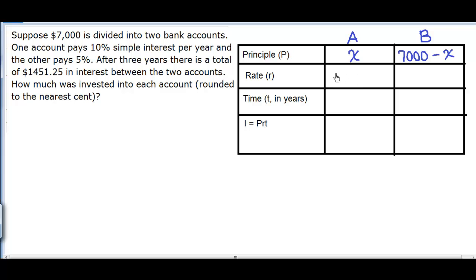Now that we've set up the principal amounts, let's get to the rates. So for account A, I'll say the rate is 5%, and let's express that as a decimal, so it'll be 0.05. And account B, we'll say that was the account that had 10%. The time for both of these accounts is three years.